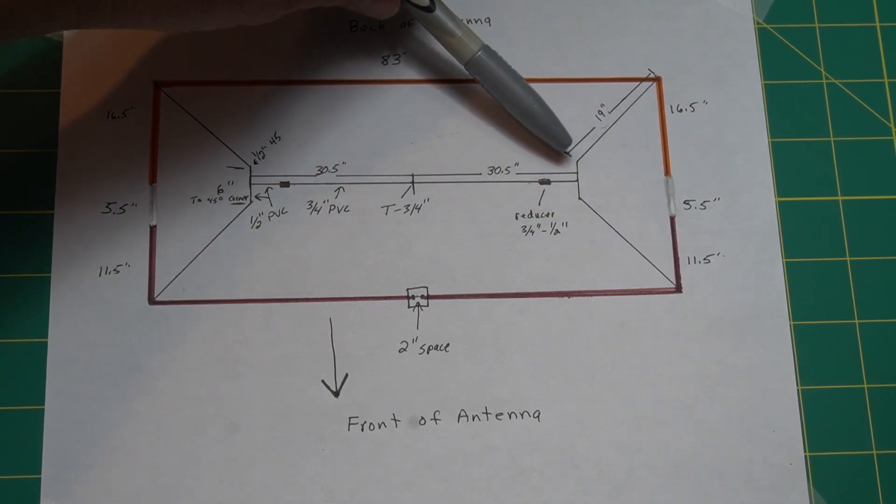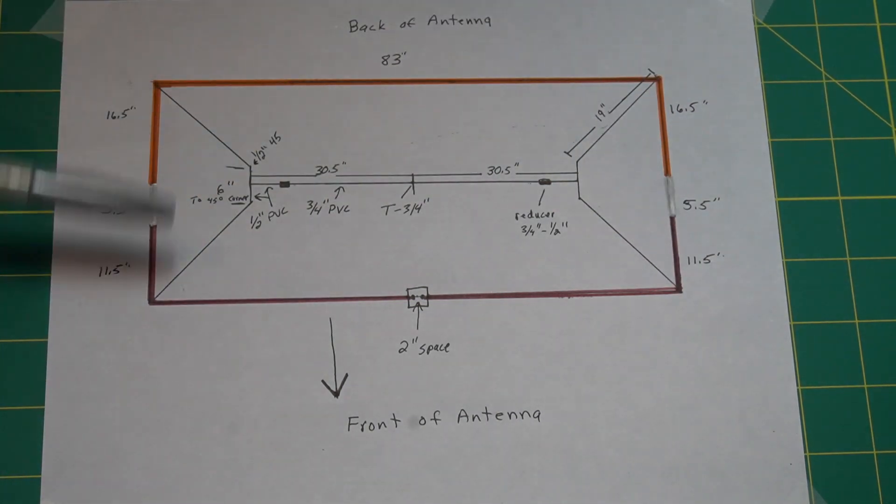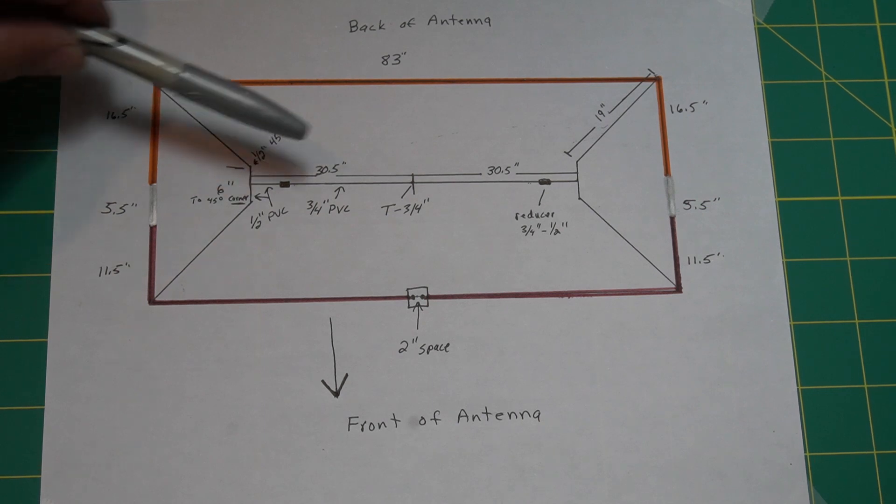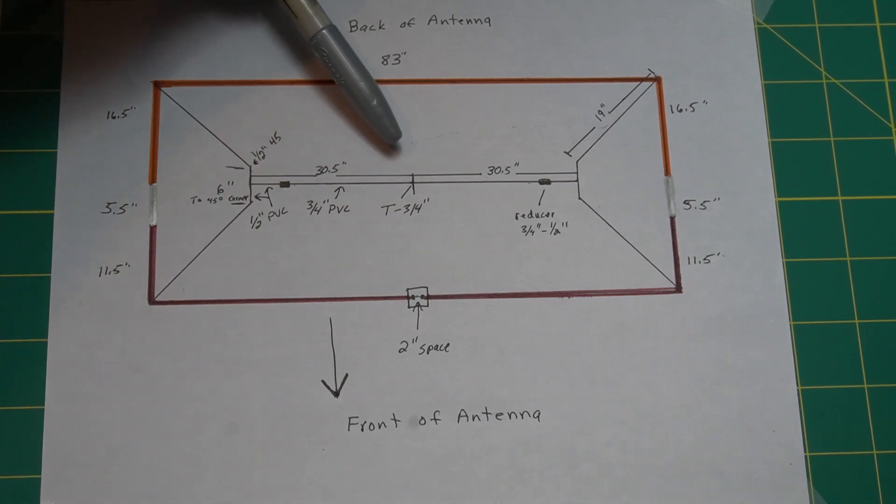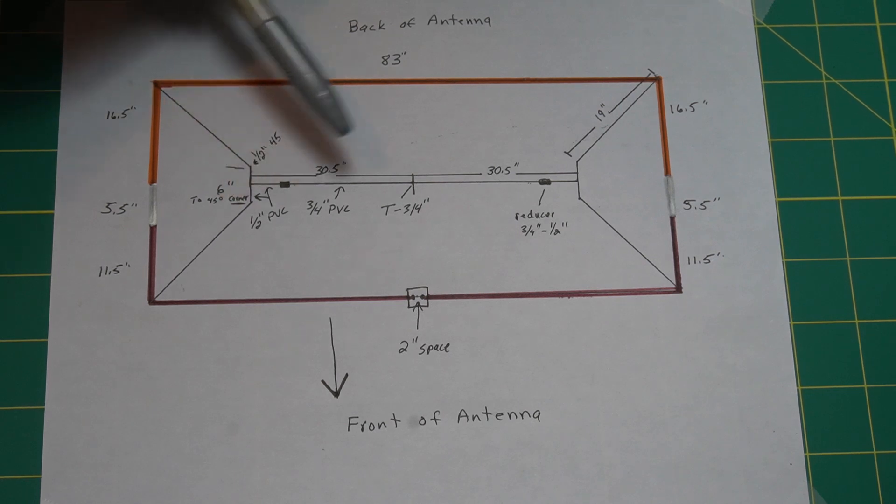And from that corner of that 45, it's 19 inches to the corners, all four. This piece here is 6 inches across to the outside of the 45 corners. You have 30 and a half inches from the center to this cross piece here on both sides.